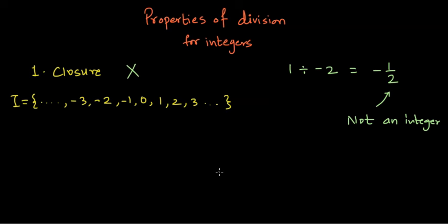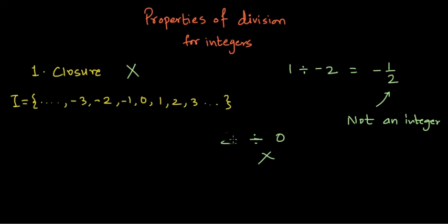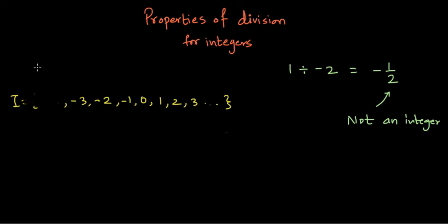You could choose any other two numbers, but remember we cannot divide any number by 0. Whenever you choose two numbers, make sure you do not divide by 0 — so something like 2 divided by 0 is not allowed. Alright, let's go to the next property. We already saw closure is not followed under the integer set for division.